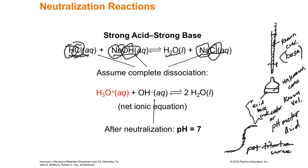Strong acids and strong bases completely dissociate — all of it breaks into positives and negatives. Since they all completely break apart and then cancel out, you're going to get a pH exactly halfway between acid and base. You're going to neutralize the acid with the base and get a pH of 7.